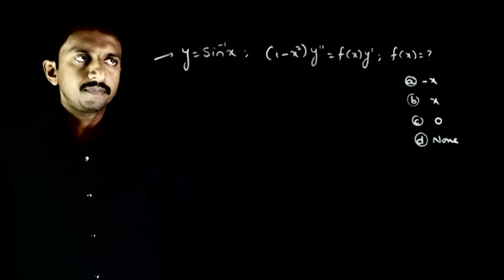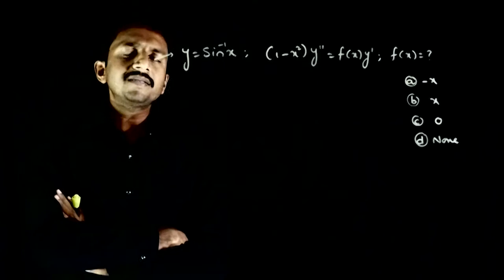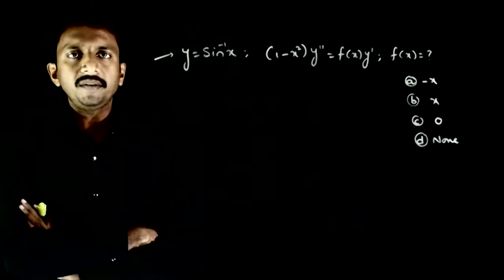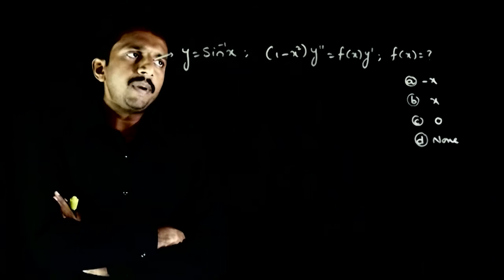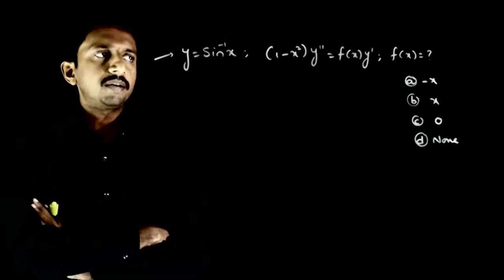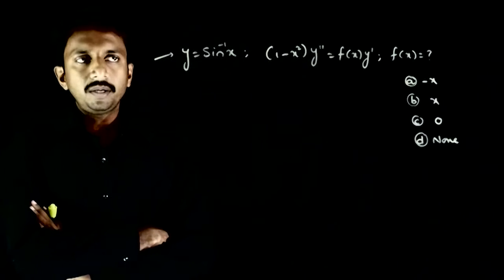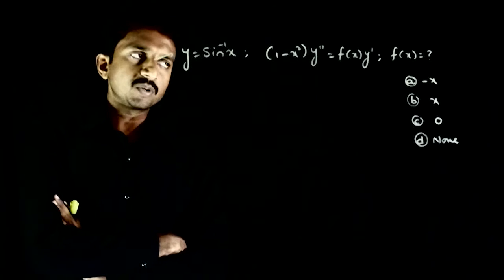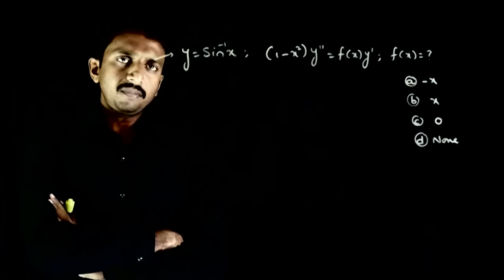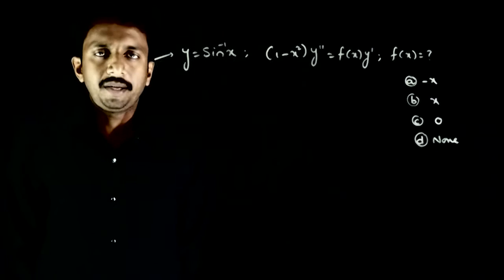Welcome students. This question is given: y is equal to sin inverse x, and 1 minus x squared times y double dash is equal to f of x times y dash. What is the value of f of x?